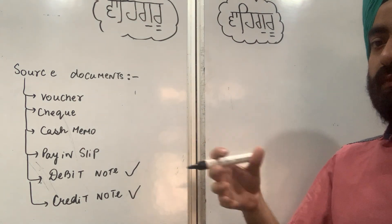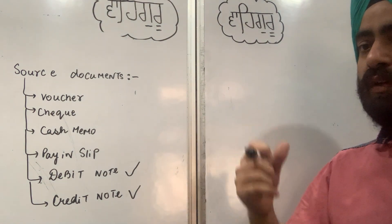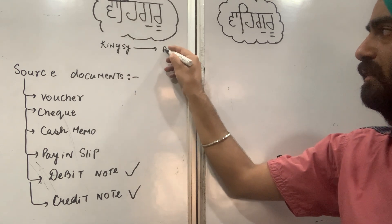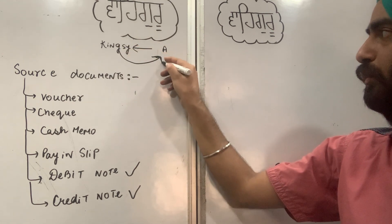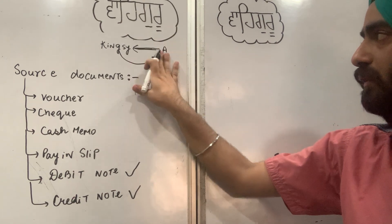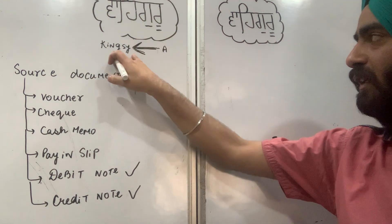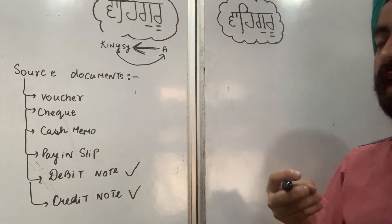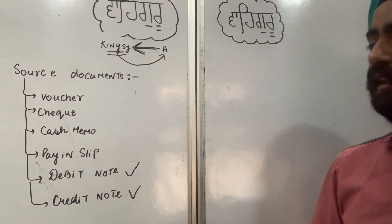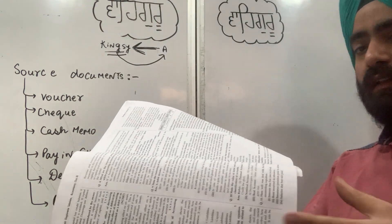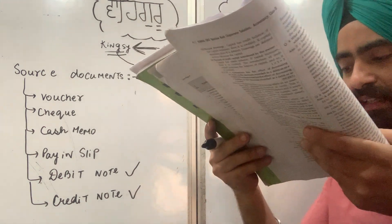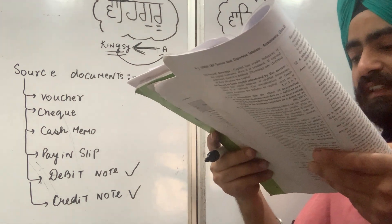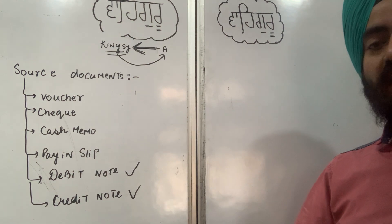Suppose kisi ne purchase return kiya hai — means proof hona chahiye ki usne purchase kiya tha aur purchase return kiya. Pehle kisi ne saamaan khareeda, usse ek bill diya gaya jo proof tha ki usne saamaan kharida. Jab usne wapas kiya, to usse bhi ek proof chahiye tha. Us proof ko debit note kehte hain — jo purchase return wala proof hai. Debit note is the document which a business enterprise makes against the supplier, for an amount which is to be received from him, when the business enterprise returns some goods which are defective or not as per specification.